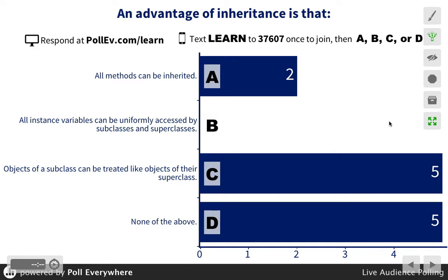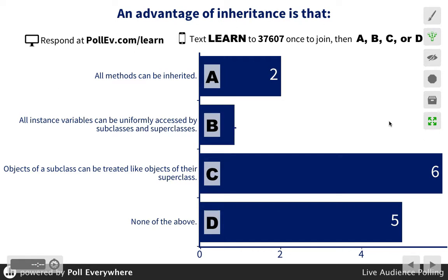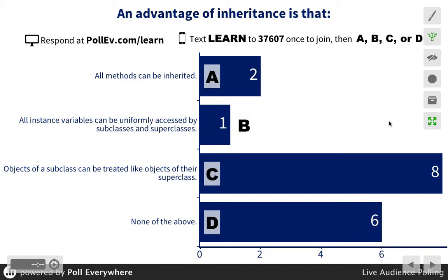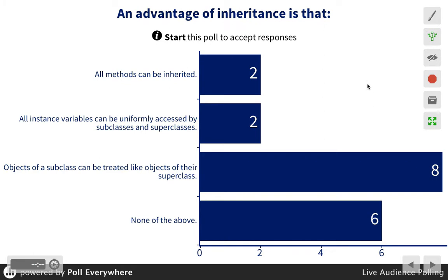We're struggling — we're like between C and D. Let's talk about this. An advantage of inheritance is that all methods can be inherited. Can all methods be inherited? No.